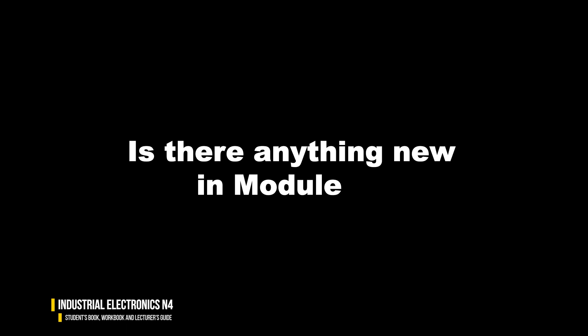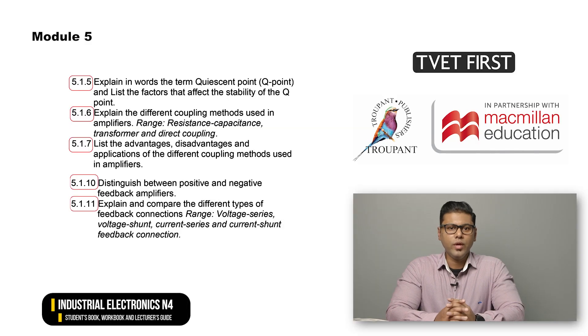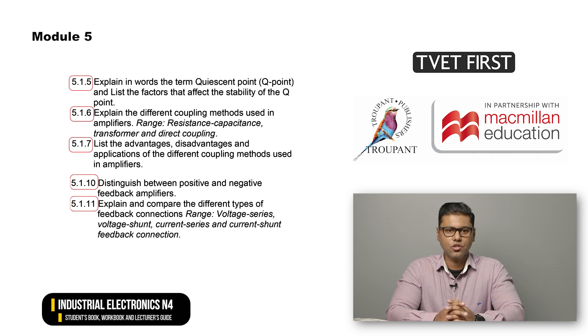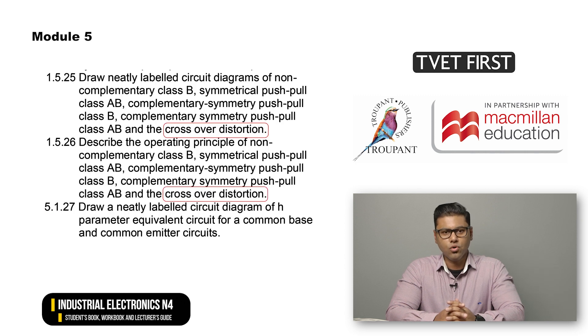Is there anything new in Module 5? Module 5 deals with transistors and operational amplifiers and has 23 learning outcomes. There are quite a few changes. For example, the requirements for Class A, B and AB amplifiers have been specified in greater detail in separate learning outcomes. New learning outcomes deal with the quiescent point or Q-point, coupling methods, positive versus negative feedback amplifiers and four types of feedback connections. The concept of crossover distortion has been added to two learning outcomes.